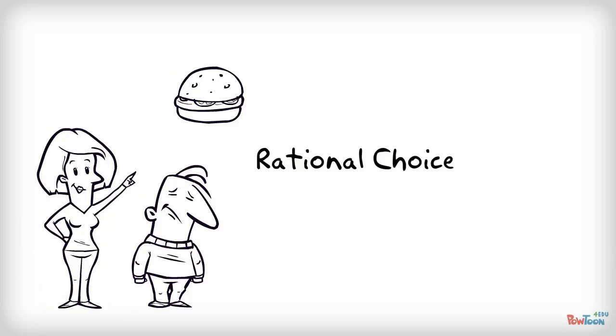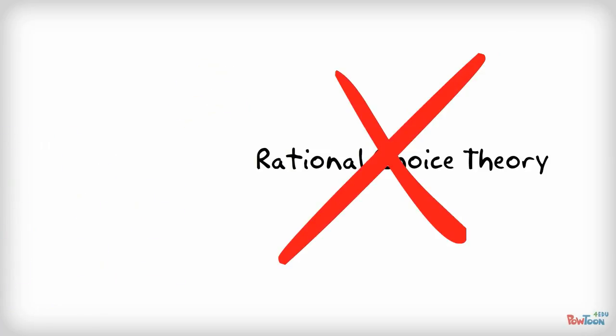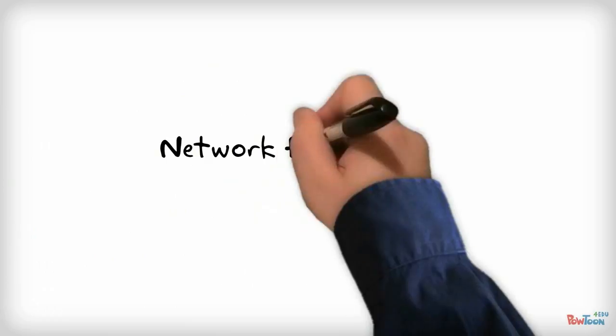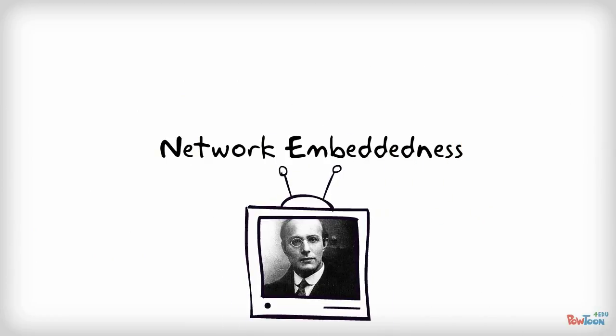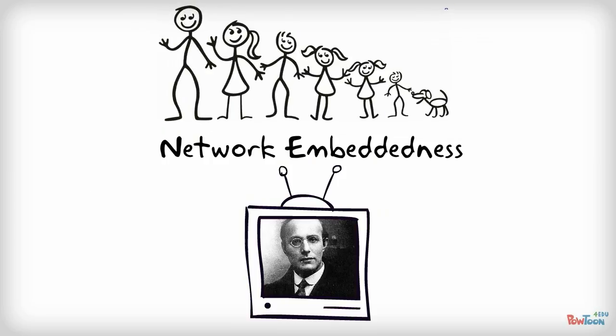Now I don't actually want to talk about rational choice theory—not because it's boring, but because what I really want to talk about is network embeddedness. Karl Polanyi invented the term embeddedness to describe the kinship relationships that defined pre-market economies.